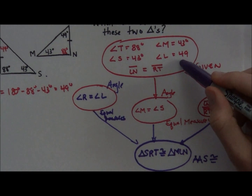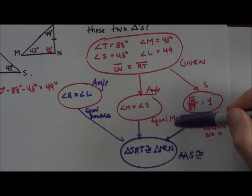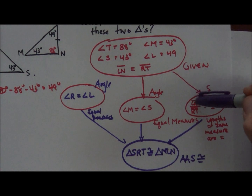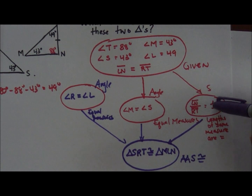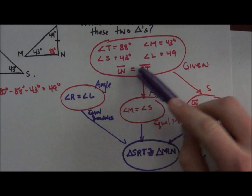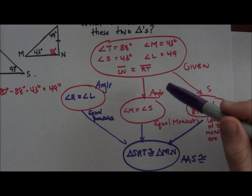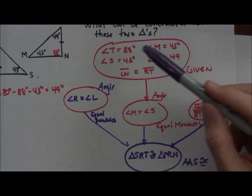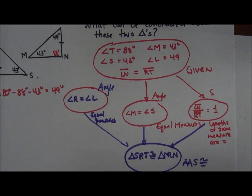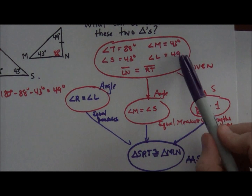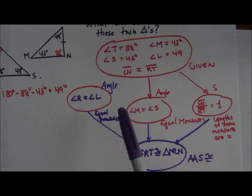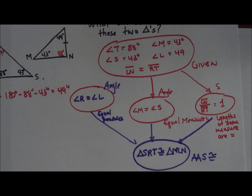The important part is labeling your given and stating what you can conclude from it. I stated angle M equals angle S with a reason, and LN divided by RT equals one. From the calculated information, angle R equaled angle L because they are equal measures. That's my final product — that's how you set up a flowchart proof for triangle congruency.